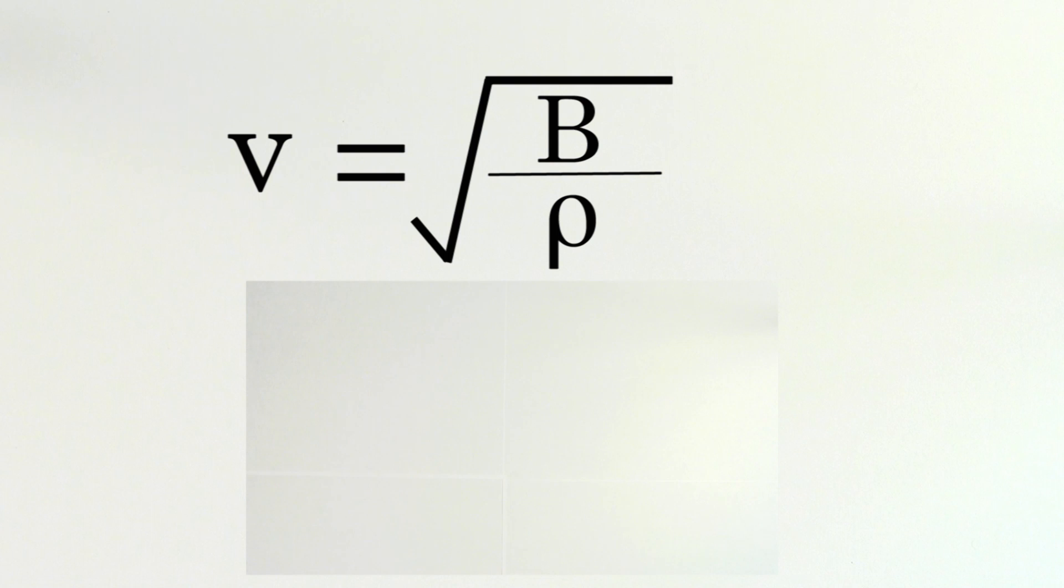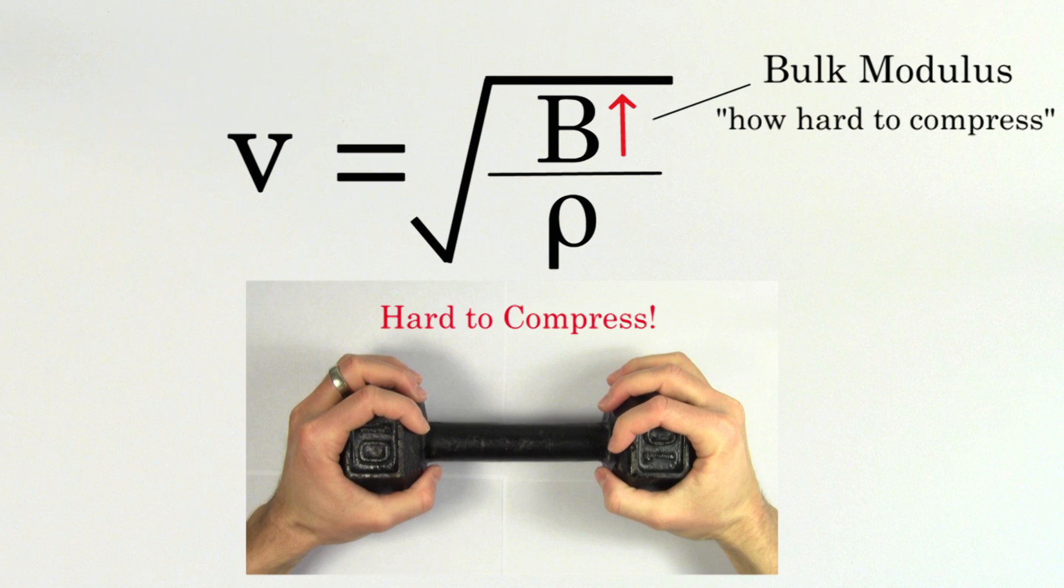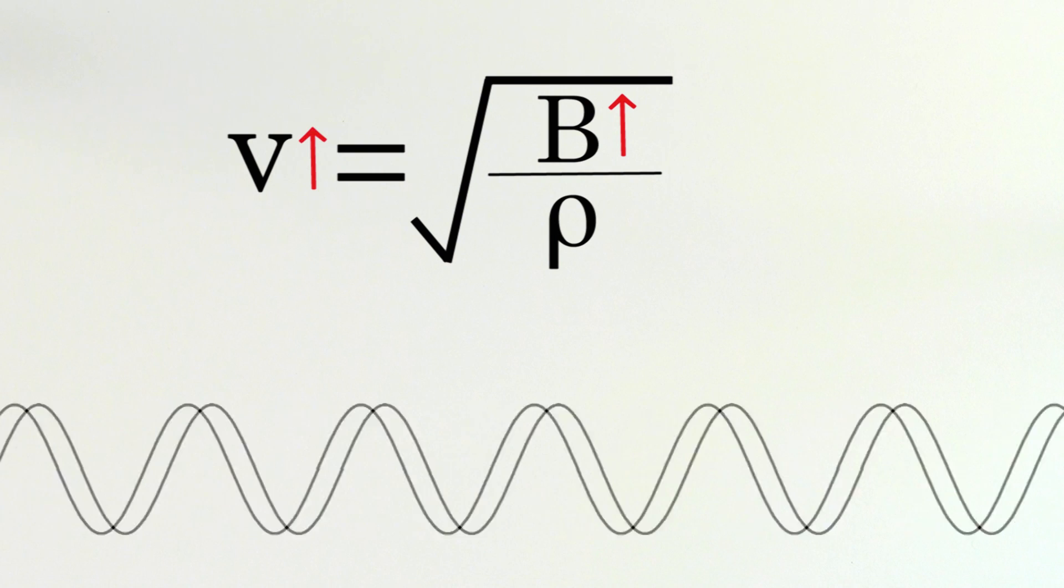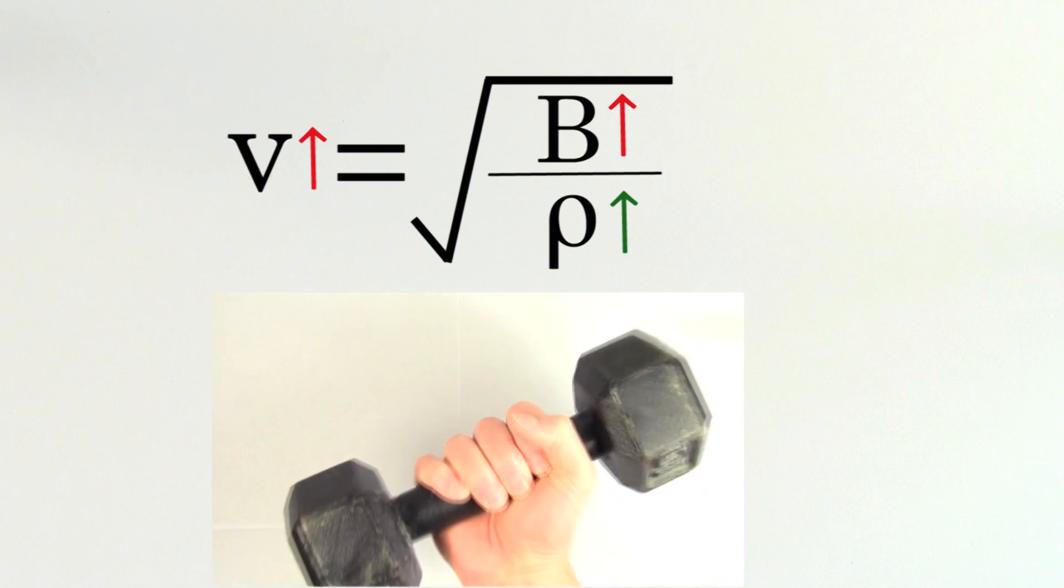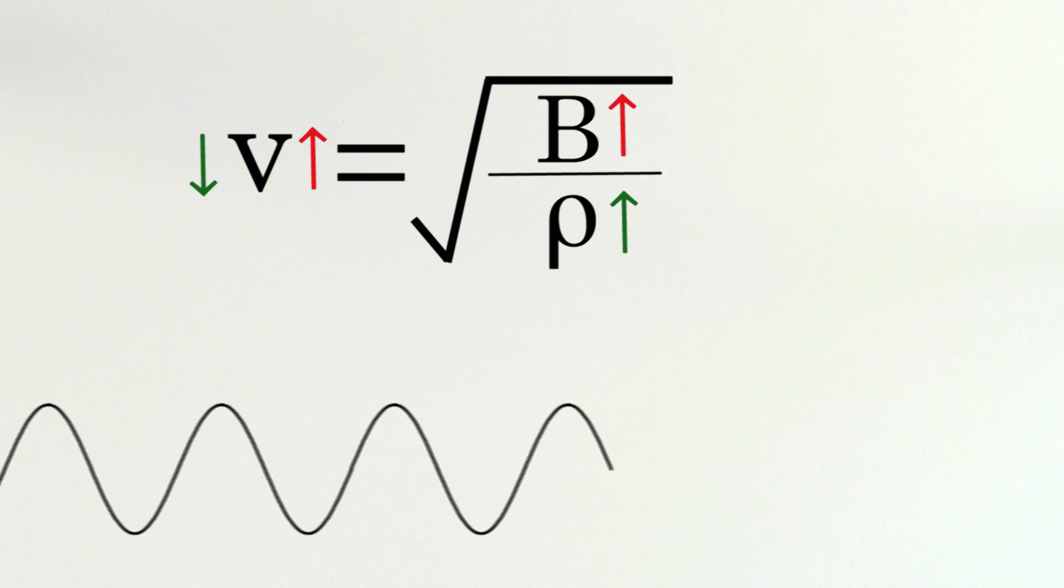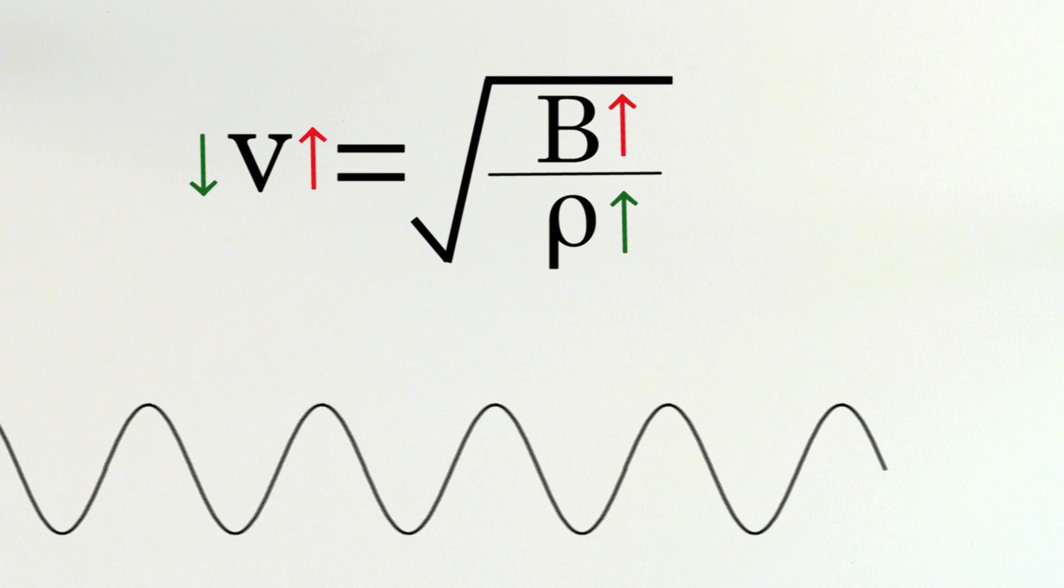So for example, let's consider a metal like iron. Iron is definitely more rigid and stiff than air, so it has a much larger bulk modulus than air. This would tend to make sound waves travel faster through iron than it does through air. But iron also has a much higher density than air, which would tend to make sound waves travel slower through it. So which is it?